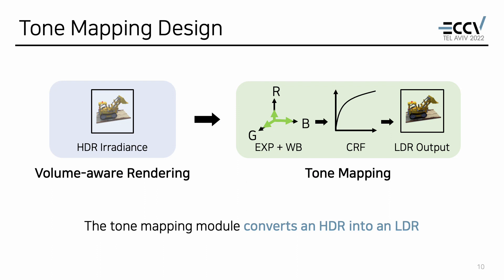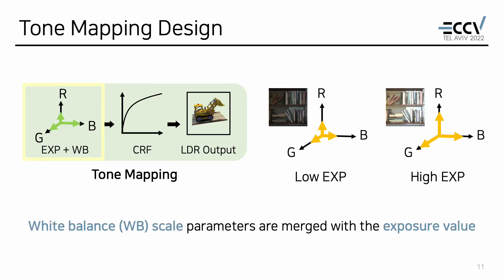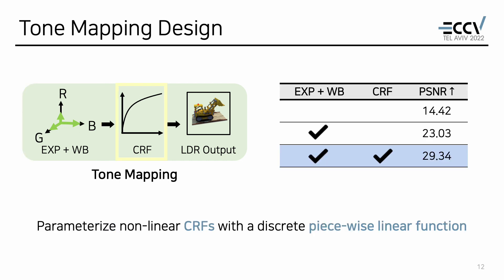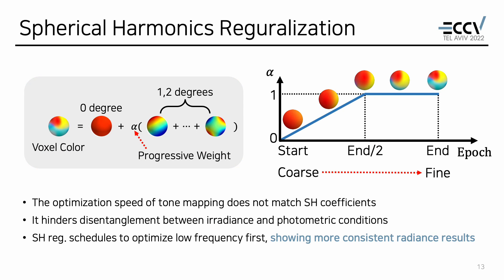The tone mapping module consists of a white balance part that scales HDR irradiance, and a simple nonlinear camera response function. White balance scale parameters are merged with exposure to avoid scale ambiguity between them. We parameterized the nonlinear camera response function with a discrete piecewise linear function.